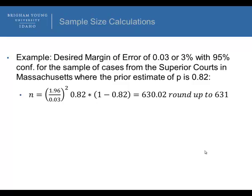So, what I'd like for you to do is, let's look at this example here. A desired margin of error of 3% or 0.03 with a 95% confidence interval for sample cases of the superior courts in Massachusetts where the prior estimate of P is equal to 0.82. So, if we have a prior estimate, we can put in 1.96 divided by 0.03, and then we square this quantity, and since we have a prior estimate, we times this quantity by 0.82 times 1 minus this prior estimate, 0.82, and if we solve for that, we get 630.02, and we would automatically round up to 631. Even though this is less than 0.5 here to the right of the decimal, regardless, we always round up when we deal with these calculations.